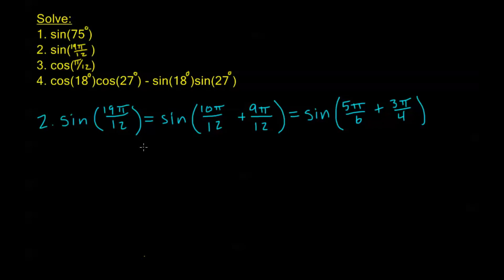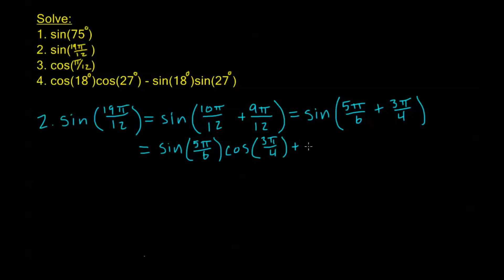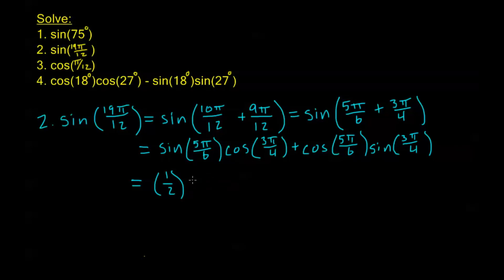Plugging into our addition formula, we get sine of 5π over 6 times cosine of 3π over 4, plus cosine of 5π over 6 times sine of 3π over 4. Plugging in: sine of 5π over 6 is 1 half, cosine of 3π over 4 is negative root 2 over 2, cosine of 5π over 6 is negative root 3 over 2, and sine of 3π over 4 is positive root 2 over 2.